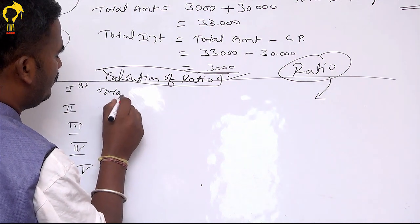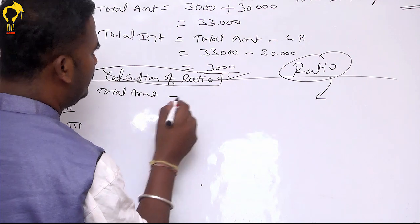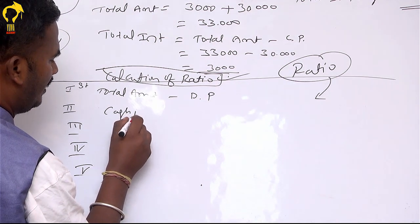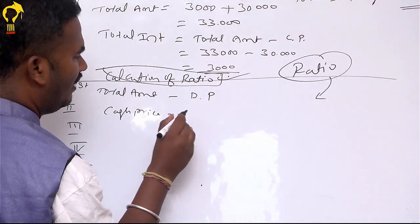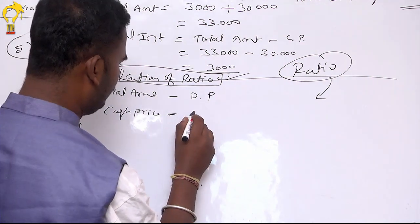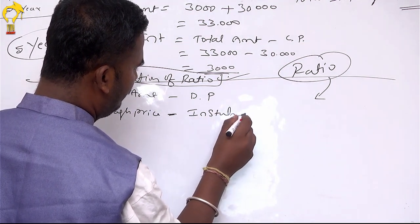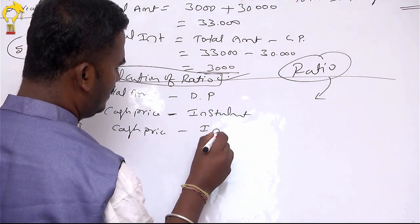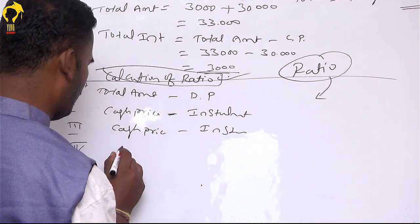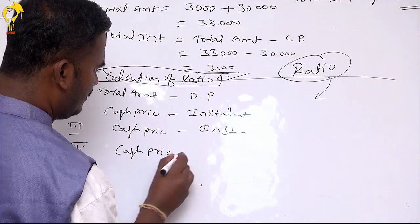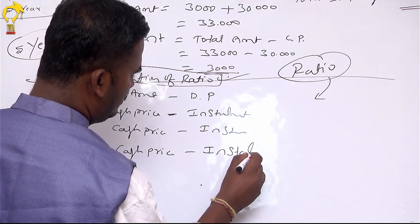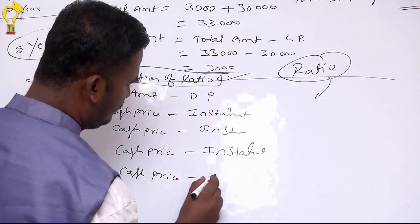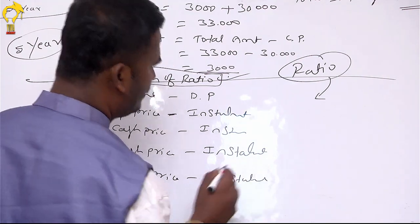Total amount minus total amount minus — cash price minus installment. What is that? Cash price minus installment. Cash price minus installment — same one. Cash price minus installment. Got it?